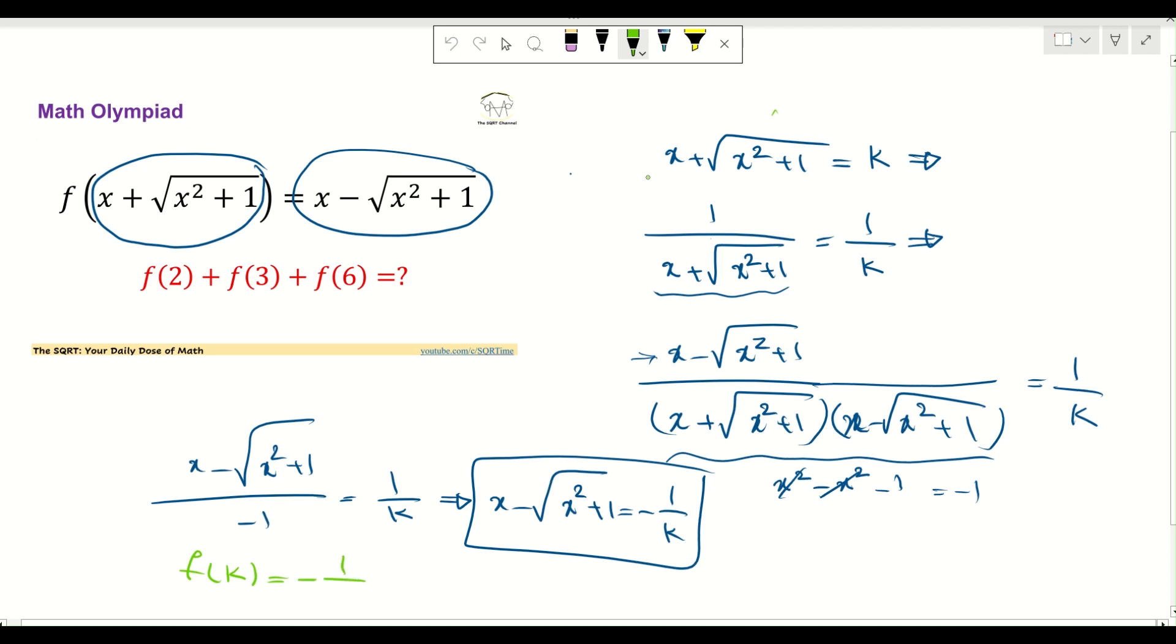Then it basically means that f(2) is going to be -1/2, f(3) is going to be -1/3, and f(6) is going to be -1/6. And if you add everything together you're going to end up with -3/6, -2/6, -1/6, which is going to be -1. And that's our final answer.